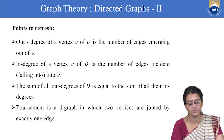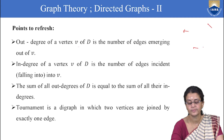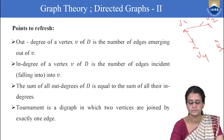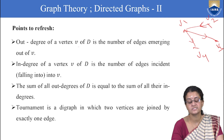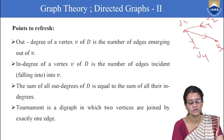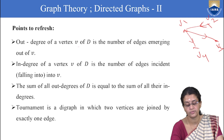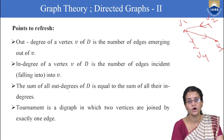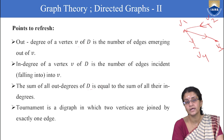Let us refresh some key points. The out-degree of a vertex is the number of edges emerging out of it. For example, if we have vertices V1, V2, V3, V4 with certain edges, the out-degree of V1 is 2. The in-degree of a vertex V in a directed graph is the number of edges incident into V. The in-degree of V1 is 1. The sum of all out-degrees is equal to the sum of all in-degrees.